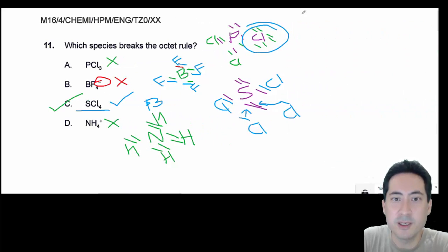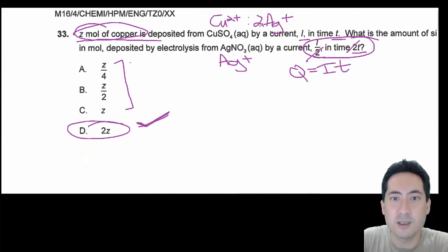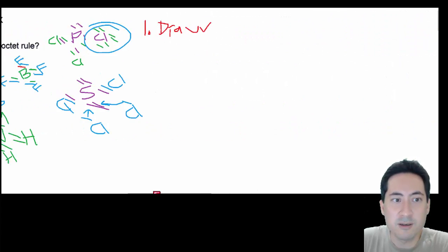Okay, the first tip is to always draw everything out, structural formulas. And this is question 33 that I just did as well. You draw it out. Do all the working. Don't try and just guess it in your head.